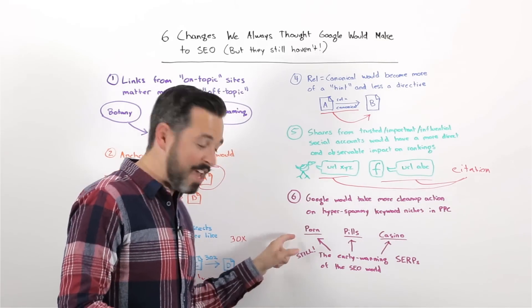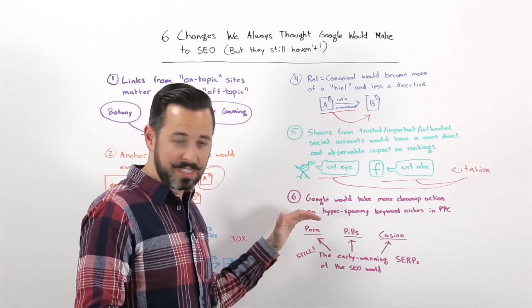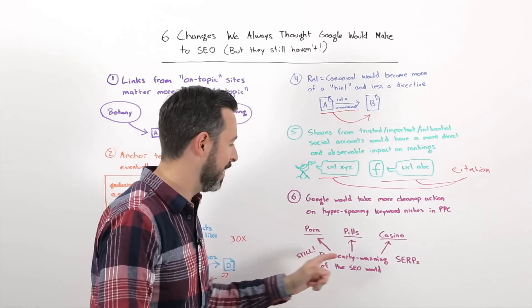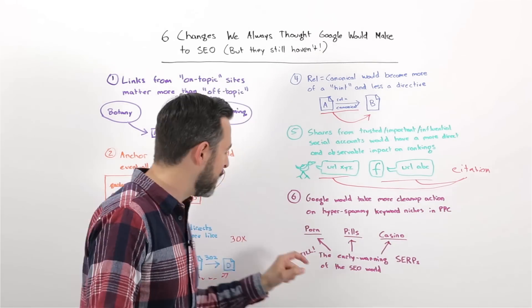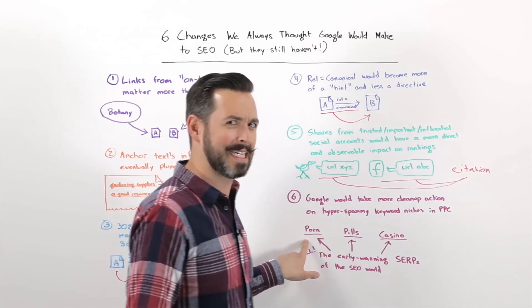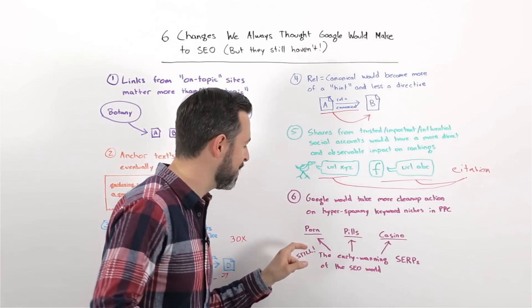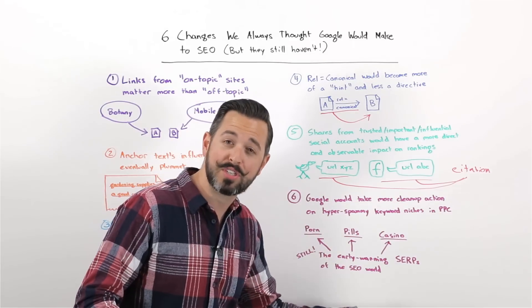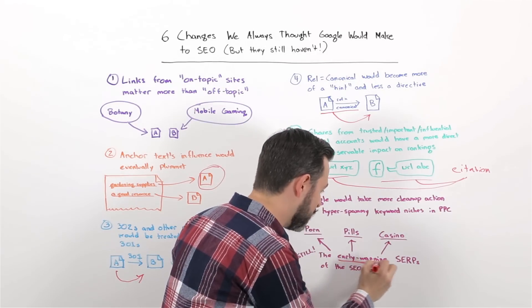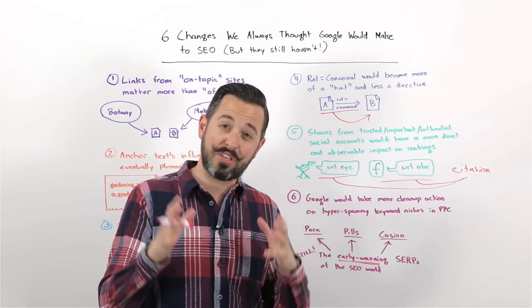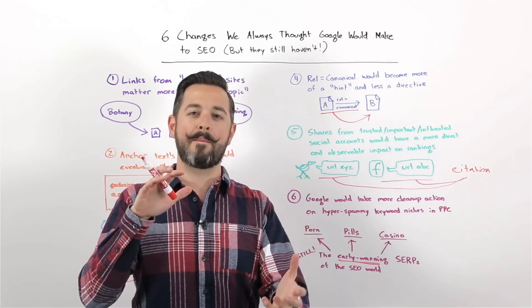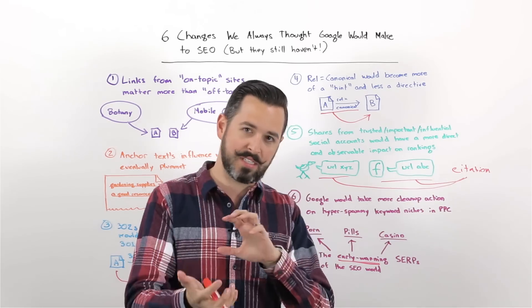But it turns out, as Matt Brown from Moz wisely and recently pointed out in his Search Love presentation in Boston, that if you look at the search results around these categories, whatever it is, buy Cialis online, Texas Hold'em no limit poker, removed for content, because Whiteboard Friday is family-friendly, folks, whatever the search is that you're performing in these spheres, this is actually kind of the early warning SERPs of the SEO world. And you can see a lot of the changes that Google's making around spam and authority and signal interpretation.